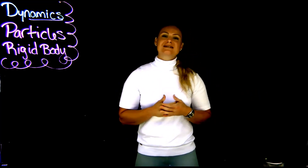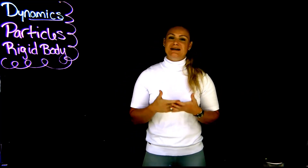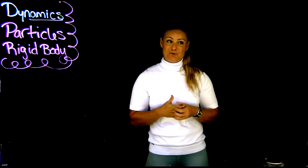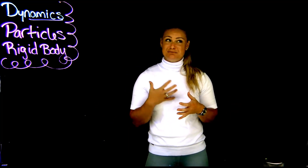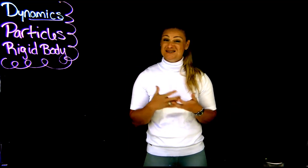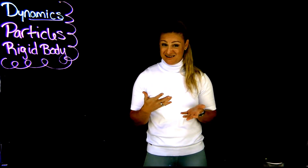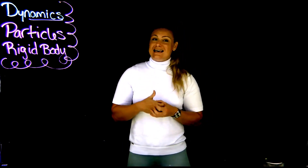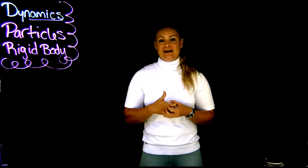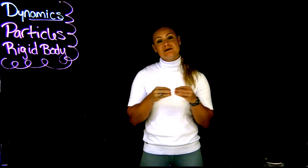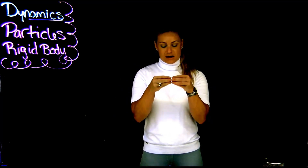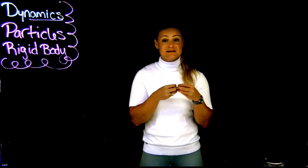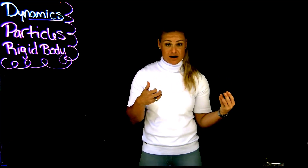I invite you to think about what is the difference between a particle and a rigid body. First, maybe you could help me answer: what is a rigid body? A rigid body is something where particles have a constant distance between themselves — that distance isn't going to change over time.